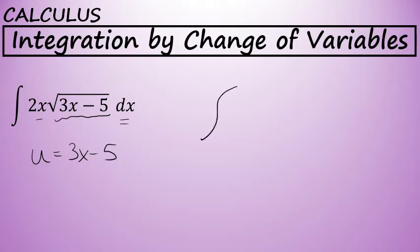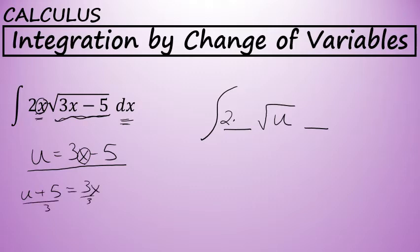Since our new integral will be in terms of u, we'll have to rewrite 2x in terms of u, and instead of having the square root of 3x minus 5, we'll have the square root of u, and we'll also have to write dx in terms of u. First, let's consider the x. The x has a coefficient of 2, which will stay there. But then comes the x, and I'm going to write that in terms of u by taking the equation u equals 3x minus 5 and solving for x. That will involve adding 5 to both sides of the equation, and then dividing both sides by 3. This means that x equals u plus 5 over 3.